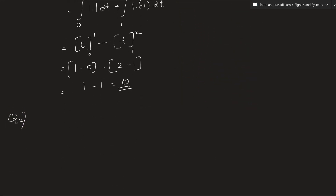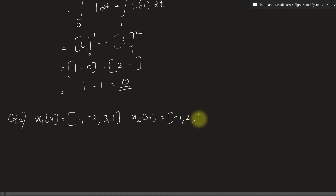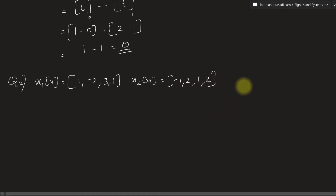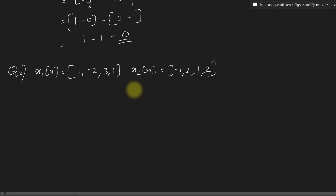Now we have a discrete signal problem. The question is: test if the given signals are orthogonal or not. We have two discrete signals: x1[n] = {1, −2, 3, 1} and x2[n] = {−1, 2, 1, 2}. For discrete signals, we check orthogonality using the inner product: the sum of x1[n]·x2[n] should be equal to 0.